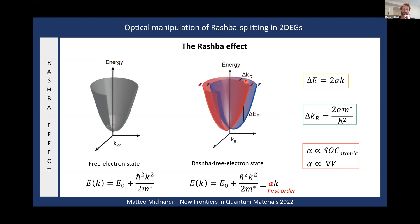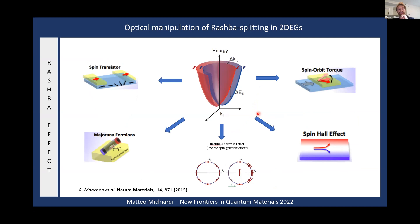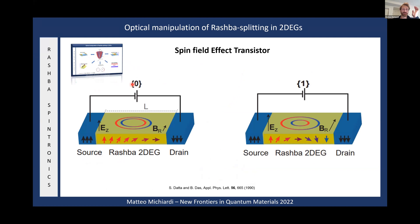The Rashba effect has been a staple in solid-state physics for many decades. It is at the center of spin-dependent phenomena such as spin-orbit torque, the spin Hall effect, and charge-to-spin conversion. More recently it is relevant in the search for Majorana fermions. An example I like to use is the spin transistor, which shows how important it is to control the Rashba effect.